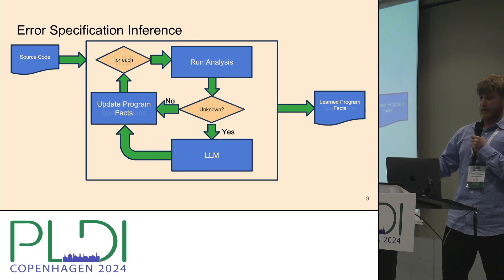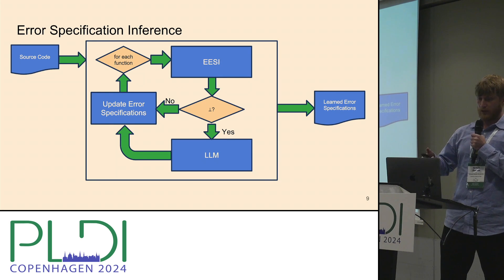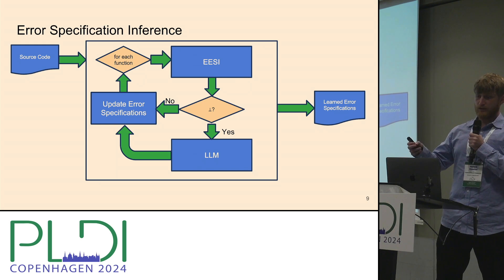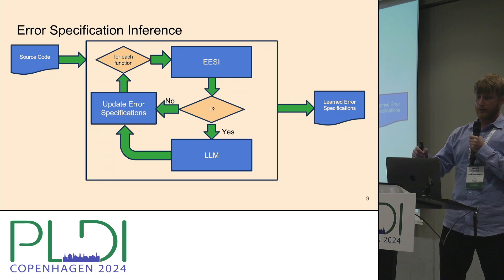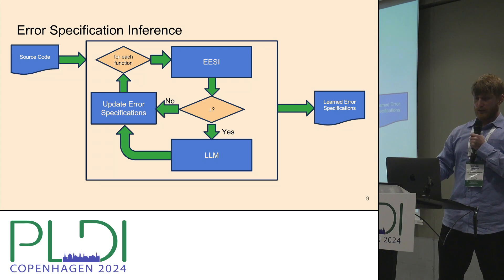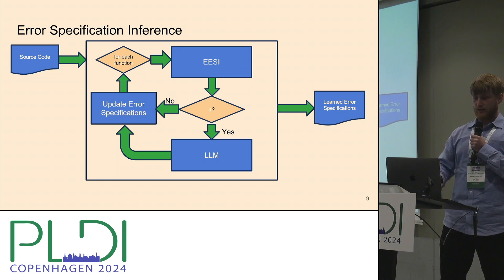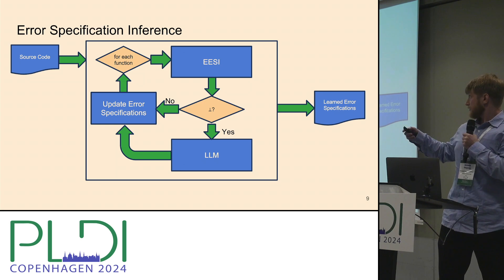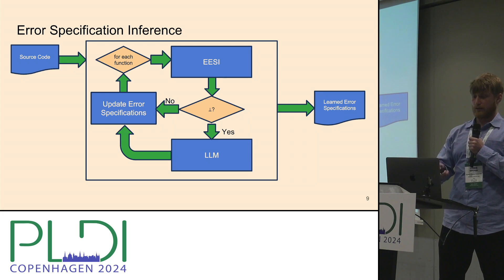The input to EasY is an initial set of error specifications, status codes, and error-only functions; the output is the set of learned error specifications passable to bug checkers. For error specification inference, we iterate over functions starting at the bottom of the call graph, performing a fixed point on each strongly connected component. At each function we run EasY, and if the output is bottom, we prompt the LLM for any error specification, update it, and continue the analysis.